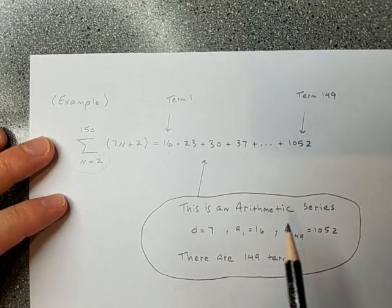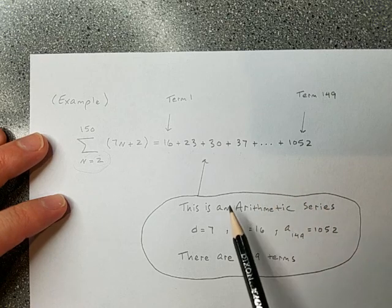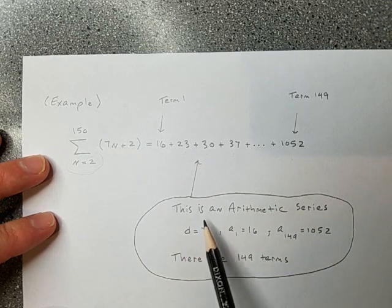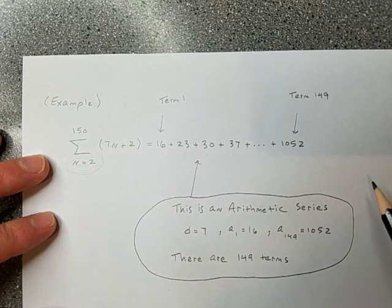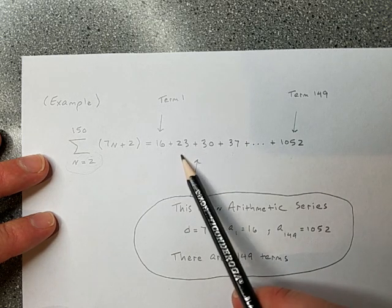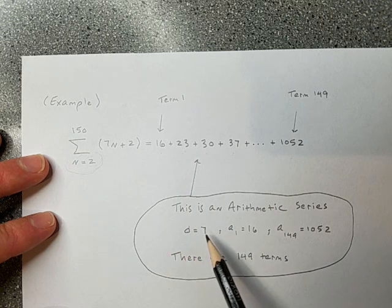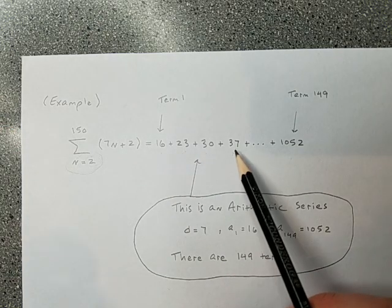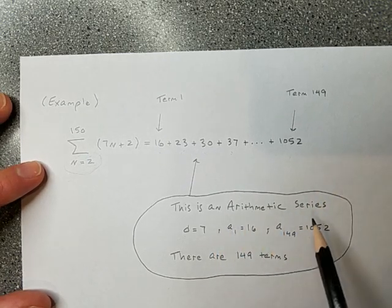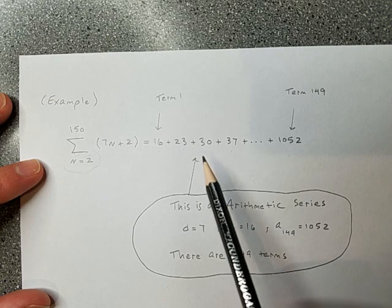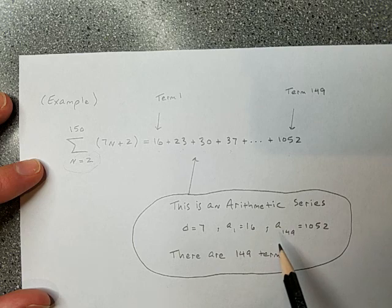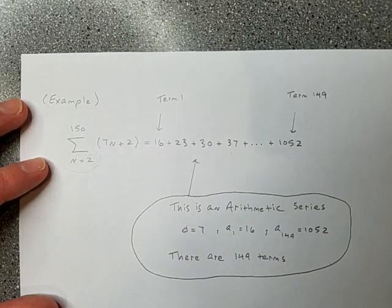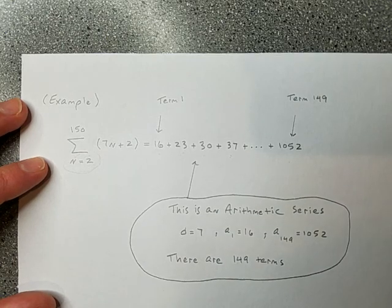Now, once we have this all in front of us, it's an arithmetic series. So that's something I talked about in another video. But what is it? An arithmetic series is such that, if you take any term, there's this certain number that you add to that term to get the next term. So look at this. If I take any term of this series, and I add seven, I'll get the next term. 16 plus seven is 23. 23 plus seven is 30. 30 plus seven is 37. So you get the idea? It's arithmetic. It follows that pattern. D is seven. D is the number we add to any term to get the next term. First term is 16. Term 149 is 1052. There are 149 terms there if I wrote them all out.